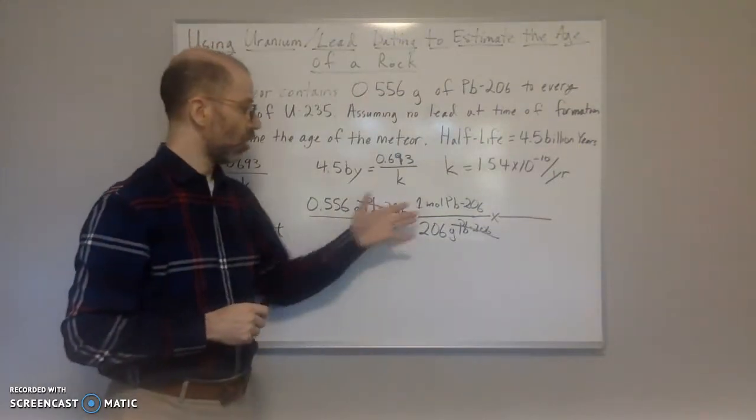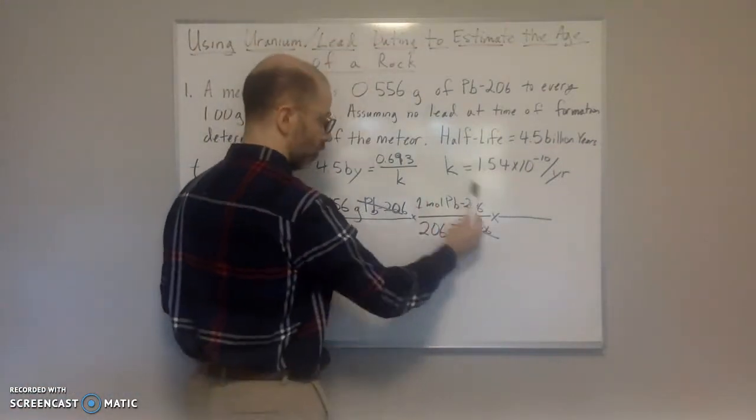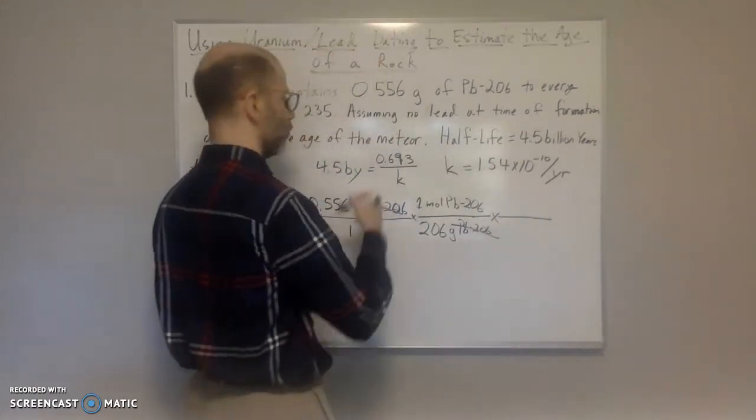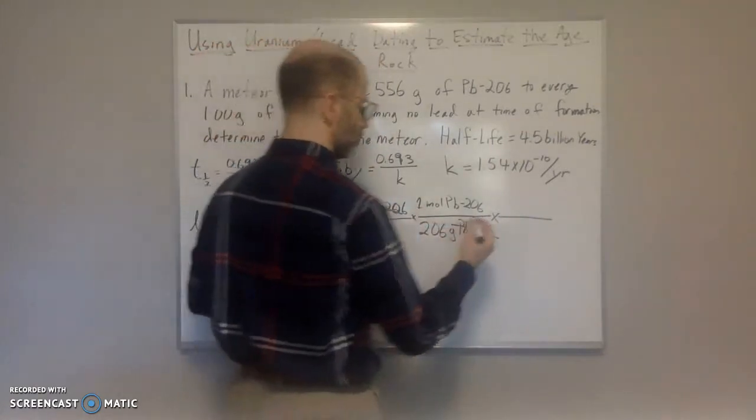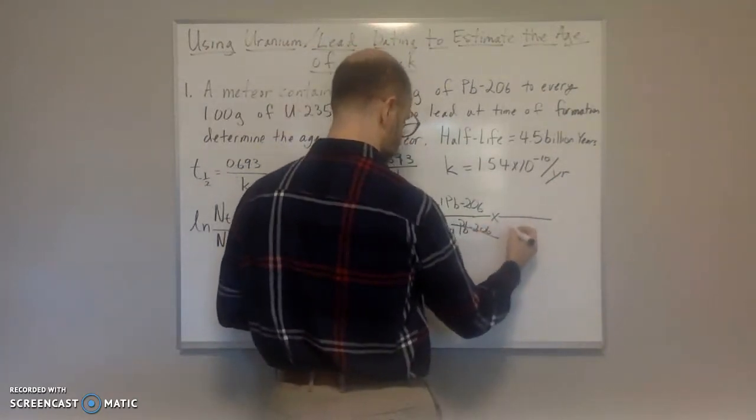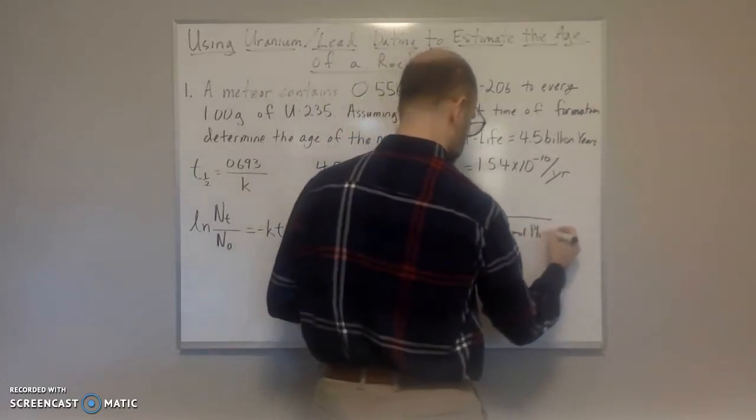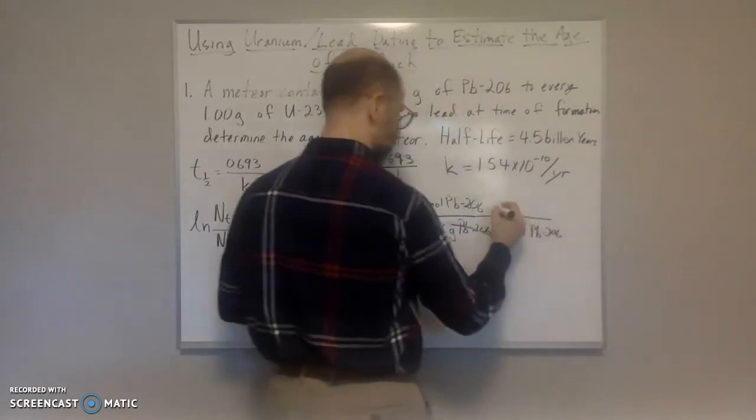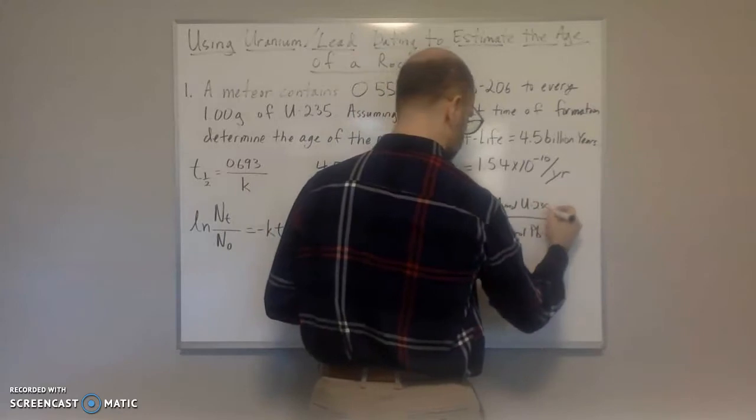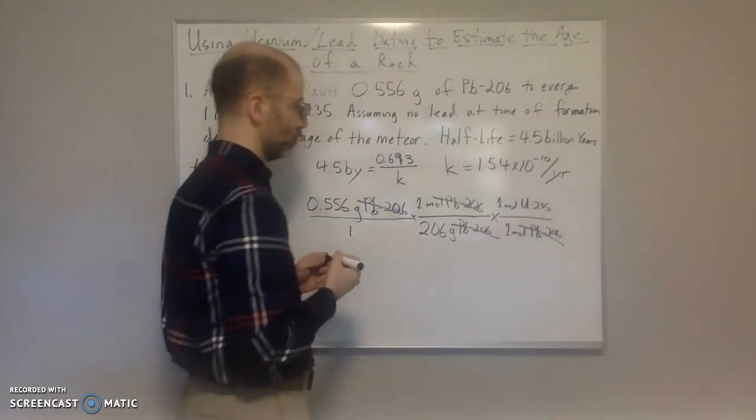Now we want to convert that to lead. This is going to be a 1 to 1 ratio. So for every 1 mole of lead-206, that came from 1 mole of uranium-235. It's a decay, it's a 1 to 1 mole ratio.